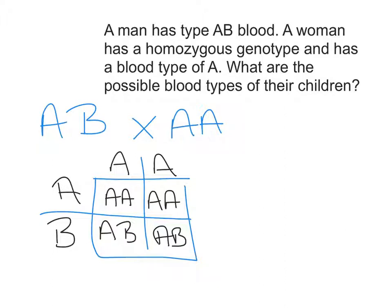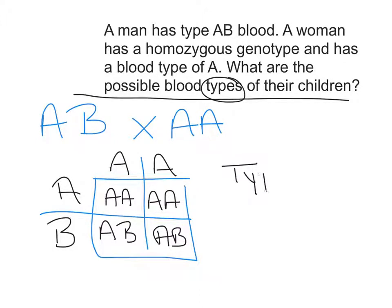Then we go back and answer the question asked: what are the possible blood types for their children? We're not actually looking for ratios here — we just want to know the actual possibilities. Asking for blood types means we're asking for phenotypes. So these kids can either be type A or type AB.